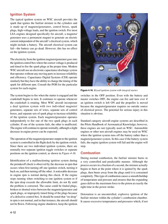Ignition system: the typical ignition system on WSC aircraft provides the spark that ignites the fuel/air mixture in the cylinders and is made up of magneto/generators, control boxes, spark plugs, high-voltage leads, and the ignition switch. For most LSA engines designed specifically for aircraft, a magneto/generator uses a permanent magnet to generate an electric current independent of the aircraft's electrical system. If the aircraft electrical system fails or the battery goes dead, this has no effect on the ignition system. The electricity from the ignition magneto/generator goes into the ignition control box where the correct voltage is produced to fire the spark plugs at the proper time. Modern WSC aircraft use an electronic capacitance discharge system (CDI) that operates without any moving parts to increase reliability and efficiency, with the ability to change the timing of the spark for different RPM.